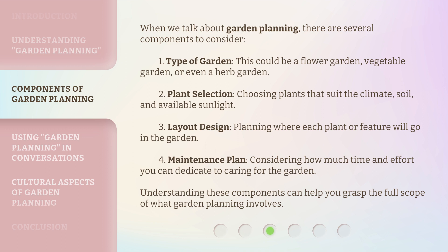Third, layout design — planning where each plant or feature will go in the garden. Fourth, maintenance plan — considering how much time and effort you can dedicate to caring for the garden. Understanding these components can help you grasp the full scope of what garden planning involves.